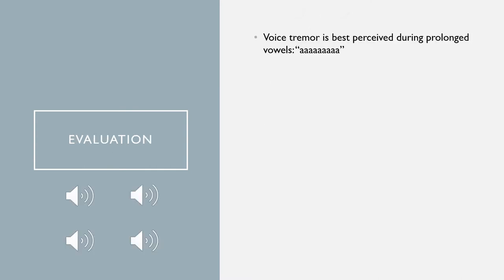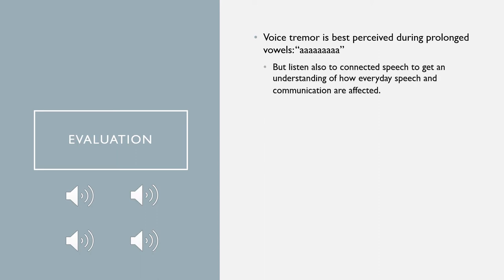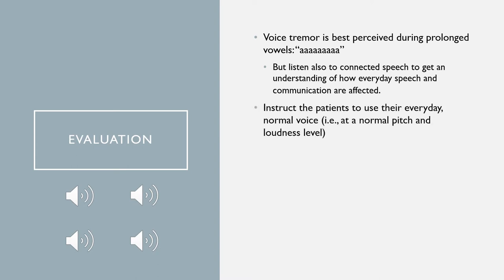Voice tremor is best perceived during a sustained phonation task, because when we speak at such a fast rate, voice tremor is often concealed. It is also important to listen to connected speech to understand how voice tremor might affect a person's communication in everyday life. When you ask your patients to prolong a vowel, always instruct them to use their everyday normal voice — at a normal pitch and loudness level. Don't encourage them to sing, because that can make them use a higher pitch and more airflow than they would when producing speech.